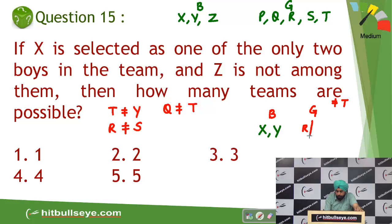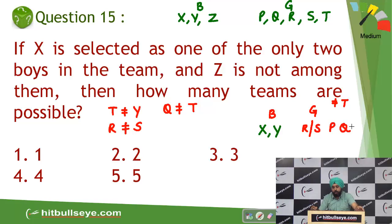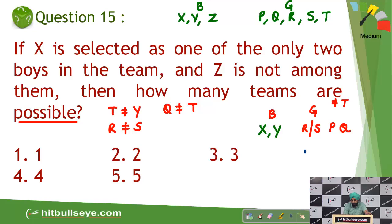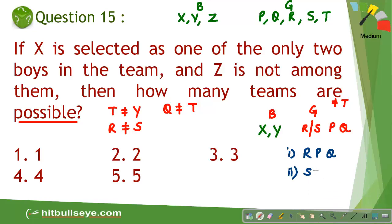With T rejected, four girls remain. Out of R and S, only one can be selected since they cannot be together. This means the remaining two girls P and Q will definitely be selected. So there are two possible teams: one with R, P, and Q as girls, and another with S, P, and Q. Boys X and Y are fixed, giving exactly two possible teams.